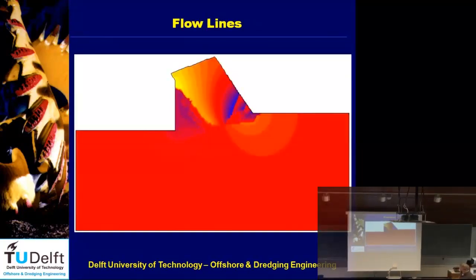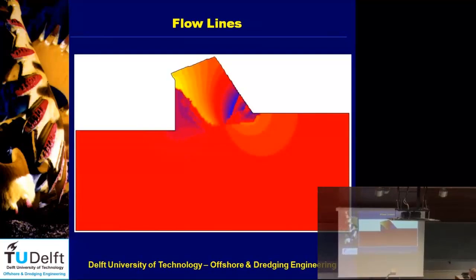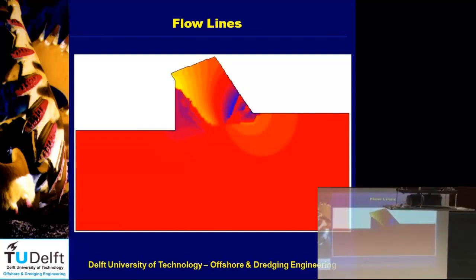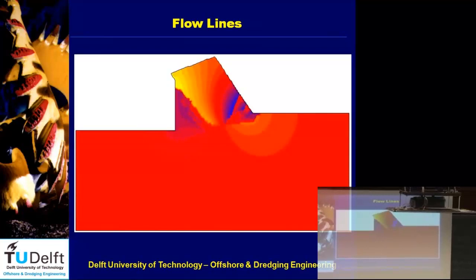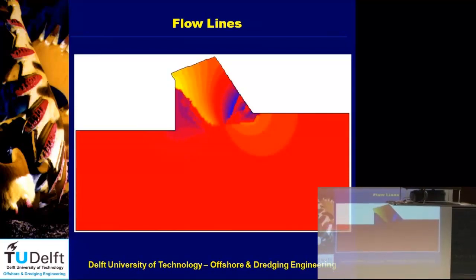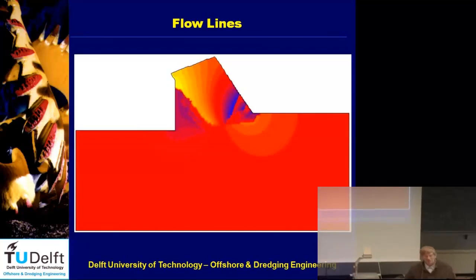These were the flow lines. You can see that in the wedge, at the top there's some flow, but in the whole lower region there's not a lot of flow. If there's not a lot of flow, there's also not much pressure gradient — because flow and pressure gradient are related: a high pressure gradient gives high flow, and vice versa.